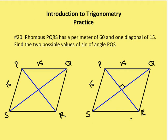We know that in a rhombus the diagonals are perpendicular to each other. So I have my right triangles here. I want to find the sine of angle PQS. There are two possibilities.